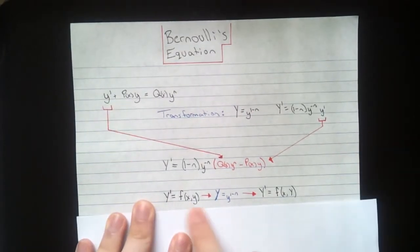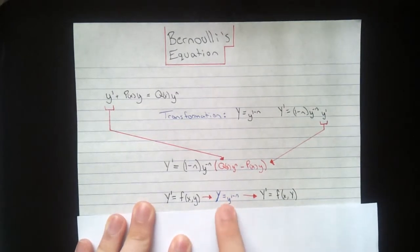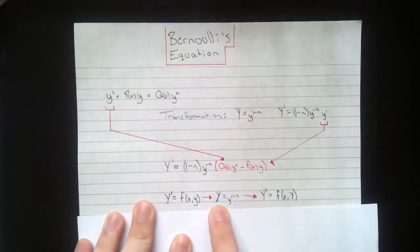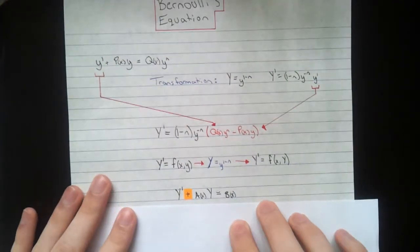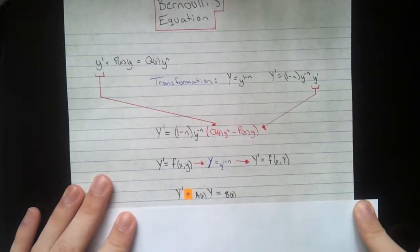Next, when you do that, you have a function of x and y, little x and y. You're going to use this transformation from up here. Big y equals little y to the power of 1 minus n, and that will give you a function of little x and big y. And then you can rearrange that, and you've now got a standard first order equation.